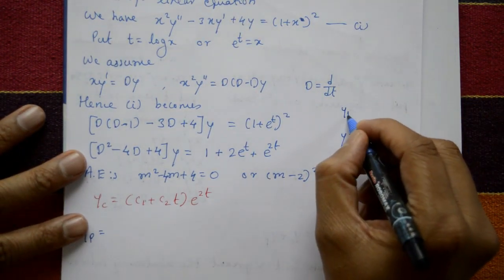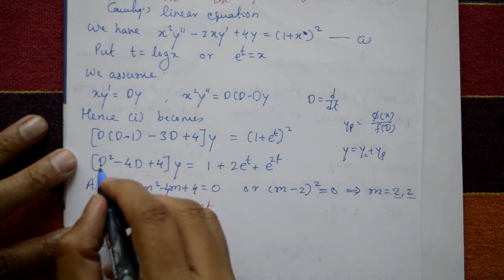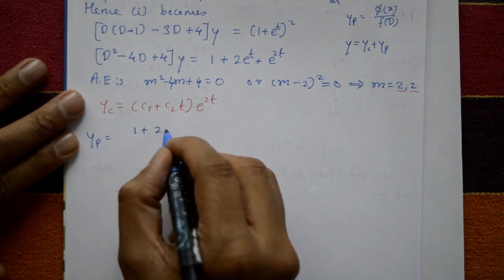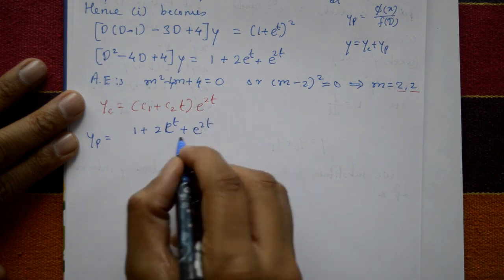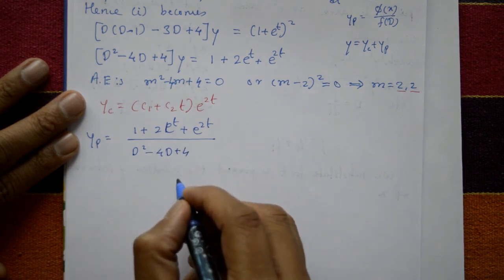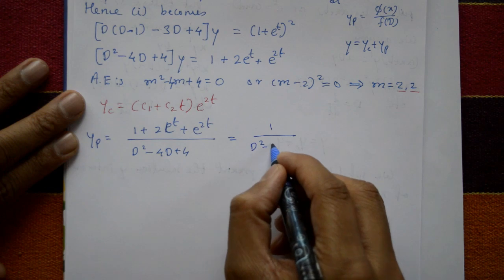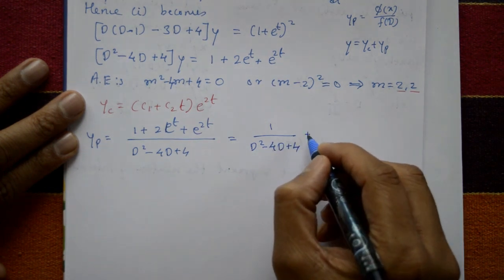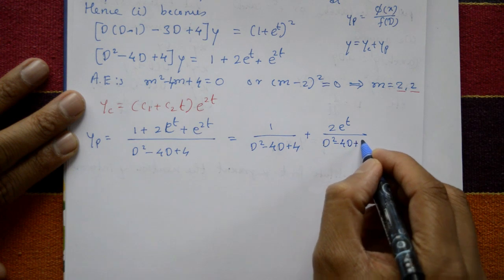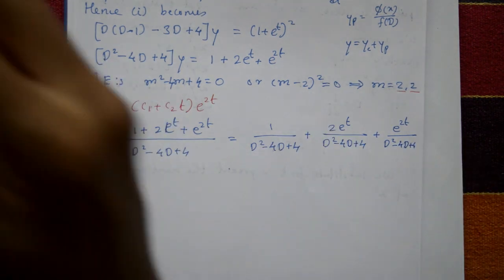Now find the particular integral. yp equals φ(x) / f(D), where φ(x) is the right-hand side and f(D) is the left-hand side operator. So φ(x) is 1 plus 2e^t plus e^(2t), divided by (D² − 4D + 4). Separate the numerator into three terms: call them P1, P2, and P3.